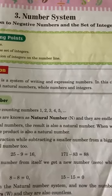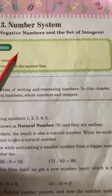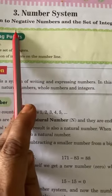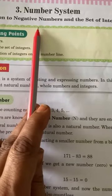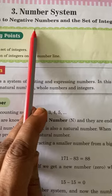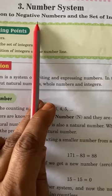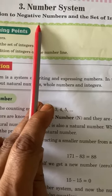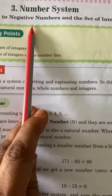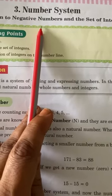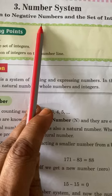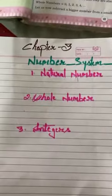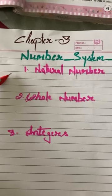Good morning students. Today we will start chapter 3, number system. Up to chapter 2 is completed and today's topic is number system. Now, what is number system? Number system is a system of expressing or writing any number. That means the way through which we write or express any number is known as number system. In this chapter we will learn about 3 number systems.